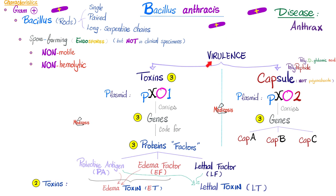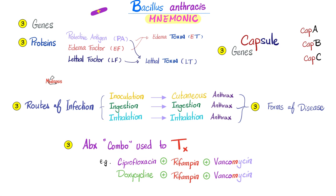Virulence factors include protective antigen and edema factor — together they make the edema toxin. Protective antigen and lethal factor together make the lethal toxin. As for the capsule, it inhibits phagocytosis. Remember the mnemonic: three genes code for three proteins or factors, which give us two toxins. Three genes also code for the capsule, which is a polypeptide capsule — not polysaccharide.